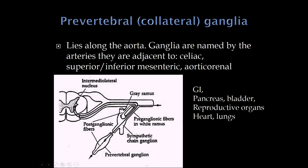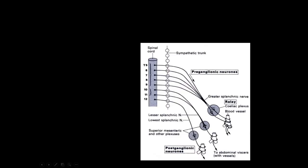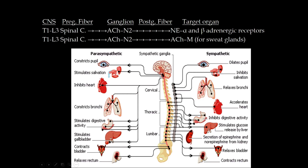The postganglionic fiber from these prevertebral ganglia supplies the GI tract, pancreas, bladder, reproductive organs, heart, and lungs — a wide distribution. The fibers that pass through the paravertebral ganglion are called splanchnic nerves: the greater splanchnic nerve goes down to the celiac plexus, superior mesenteric, and so on. These are our prevertebral ganglia.